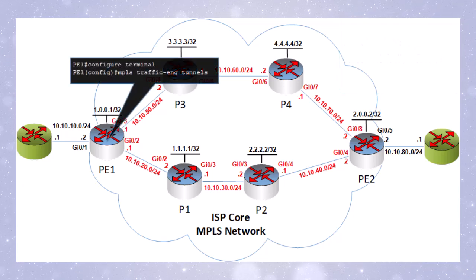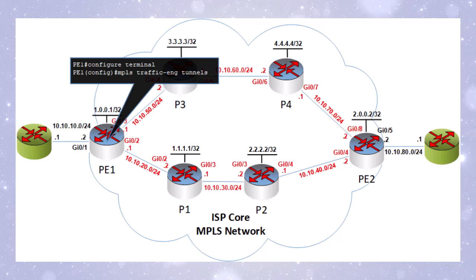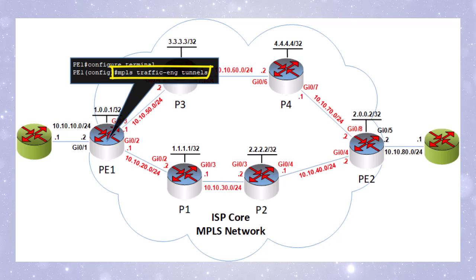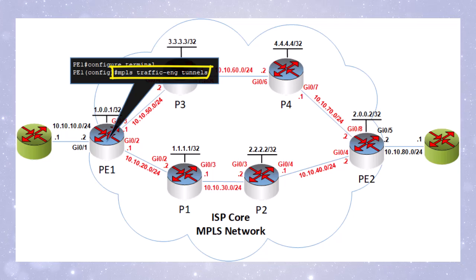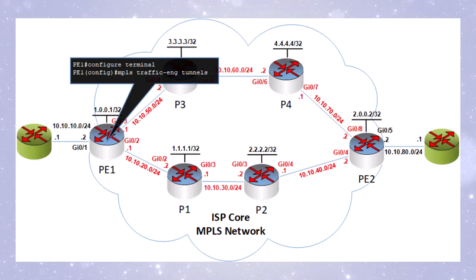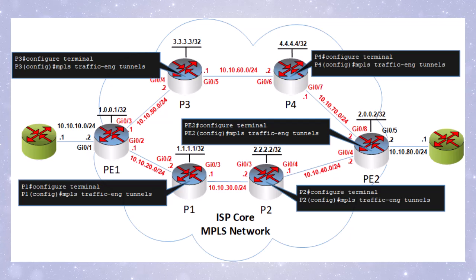We'll start with enabling MPLS traffic engineering globally on our P and PE routers. Let's start with our PE1 router. It's as simple as issuing the following command: 'mpls traffic-eng tunnels'. You'll notice that enabling MPLS is usually the easy part — it's the rest of the protocols and mechanisms that can often become more complicated. Now we do this on all of our P and PE routers, so MPLS TE is enabled globally on all of them.